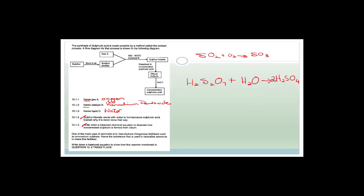One of the main uses of ammonia is to manufacture nitrogenous fertilizers such as ammonium sulfate. Name the substance used to neutralize ammonia to make this fertilizer. We need to add sulfuric acid, H₂SO₄ — because ammonium sulfate is (NH₄)₂SO₄, and we need a hydrogen plus a sulfate, which comes from sulfuric acid.